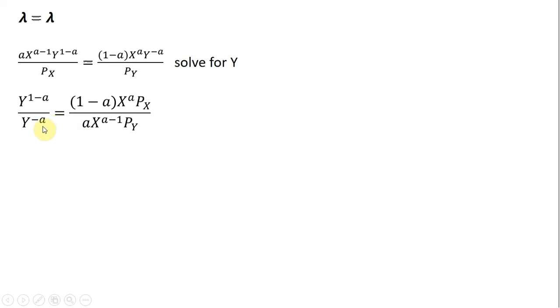So what did I do here? I first multiplied both sides through by the price of good X. That's why the price of good X is over here now. The next thing I did was I divided both sides through by Y raised to the minus A power. So that's why Y raised to the minus A is now over here. I divided both sides through by it. And then finally, this term here, A multiplied by X raised to the A minus 1 power, I divided everything through by that term. So that's why this now appears over here on the right-hand side.